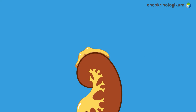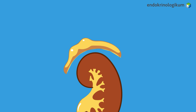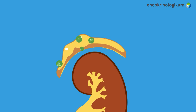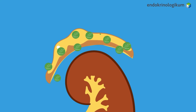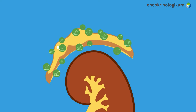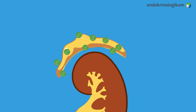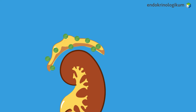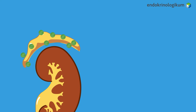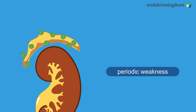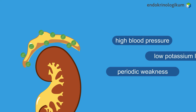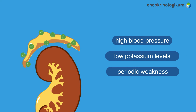The saline load test is used to detect abnormalities in the adrenal cortex. It is used to determine whether there is an overproduction of the hormone aldosterone. Elevated aldosterone production can lead to symptoms such as periodic weakness, high blood pressure, or low potassium levels.